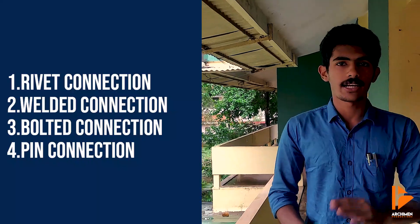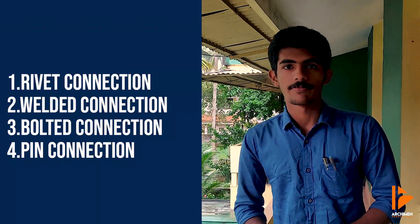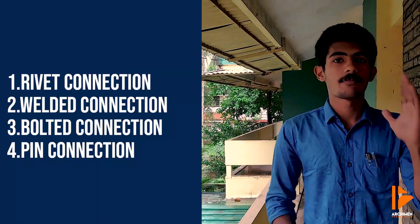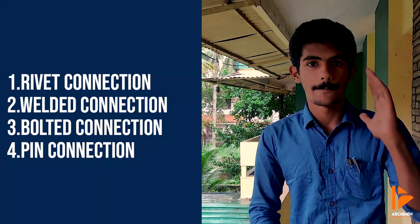There are four types of steel connections: rivet connection, weld connection, bolt connection, and pin connection. For rivet connections, we use a rivet with a head and shank. The shank diameter is called the nominal diameter.